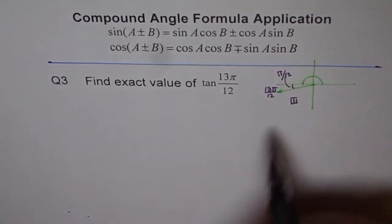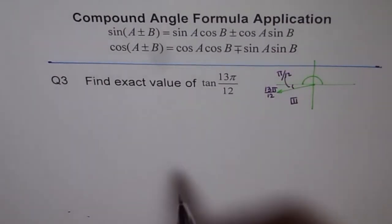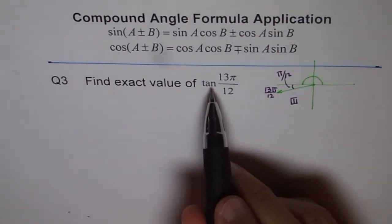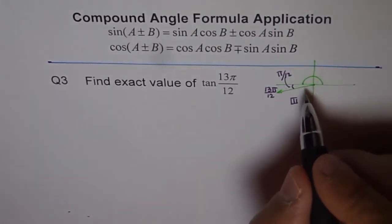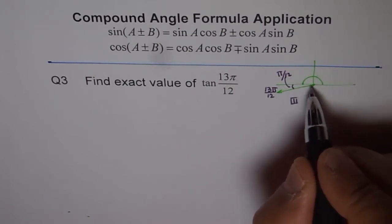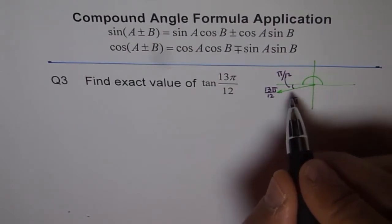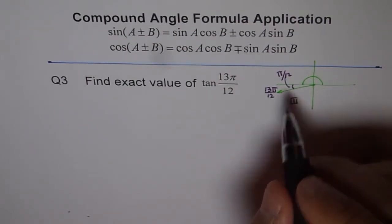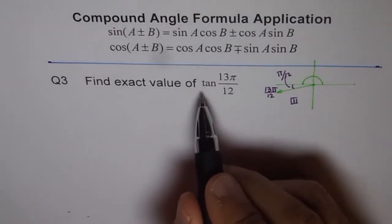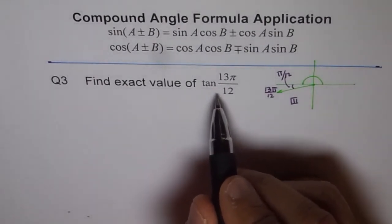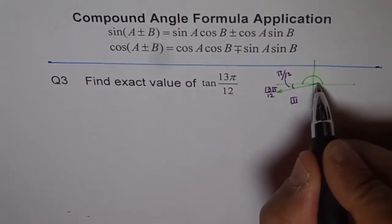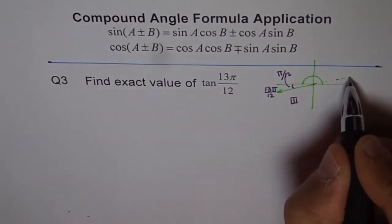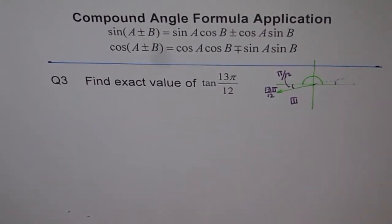In quadrant 3, tan is positive, so we are expecting a positive value. If we write in terms of the related acute angle or the reference angle, then tan of 13π by 12 is the same as tan of π by 12. That is the related acute angle.